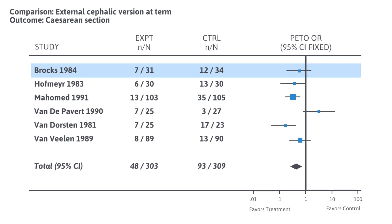The next column shows the results, with a center line at one, meaning no difference between the treatment and control group. The blue square for the first study is to the left of one, showing that women who had the external cephalic version were less likely to have a cesarean section. However, the two wings extending from the blue square represent the 95% confidence interval, and the upper end crosses the line at one, meaning the result could have actually favored the control. So that particular study was not statistically significant.